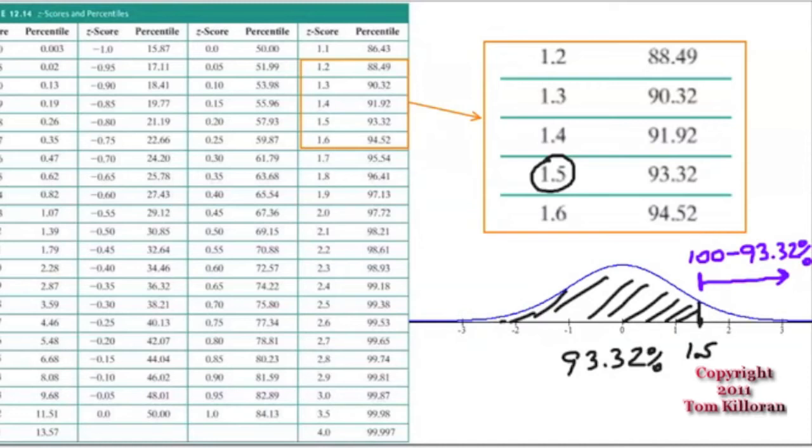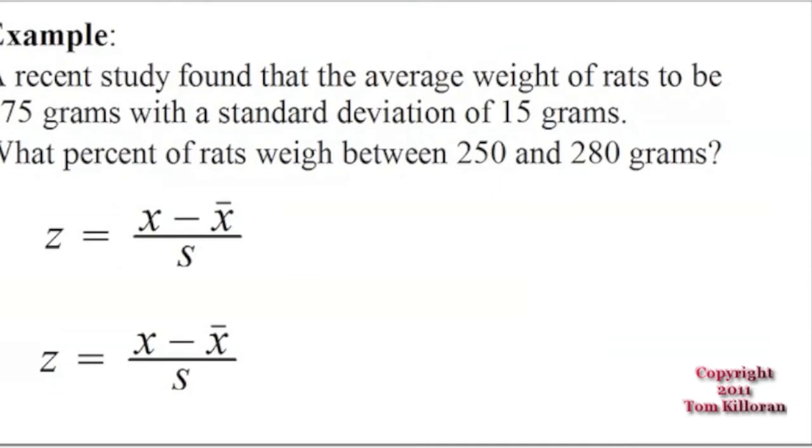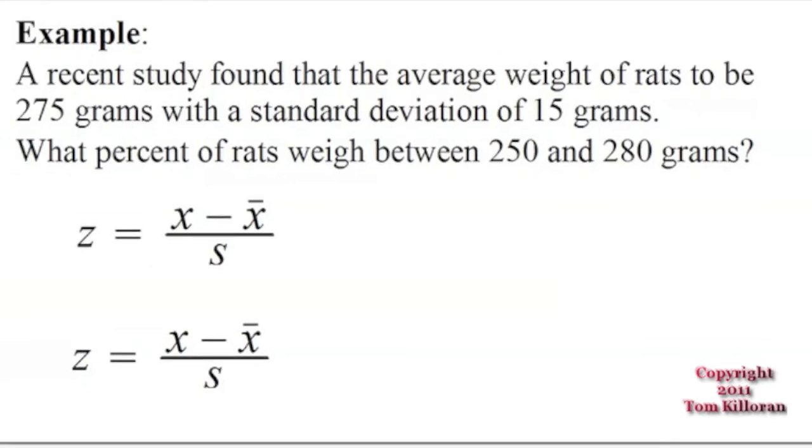Let's do an example. We have here a recent study found that the average weight of rats to be 275 grams with a standard deviation of 15 grams. And I want to find what percent of rats weigh between 250 and 280 grams. Now these numbers here, they're not the mean, they're not the standard deviation, so these must be data points. So we're going to call them x. And since there's two of them, we're going to talk about x1 and x2.